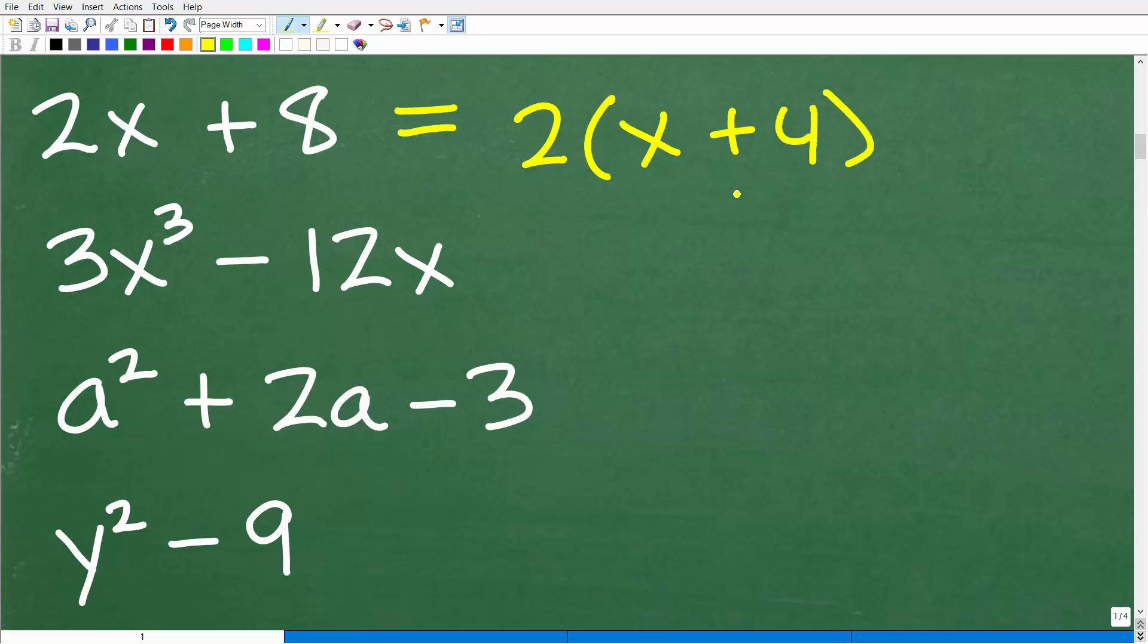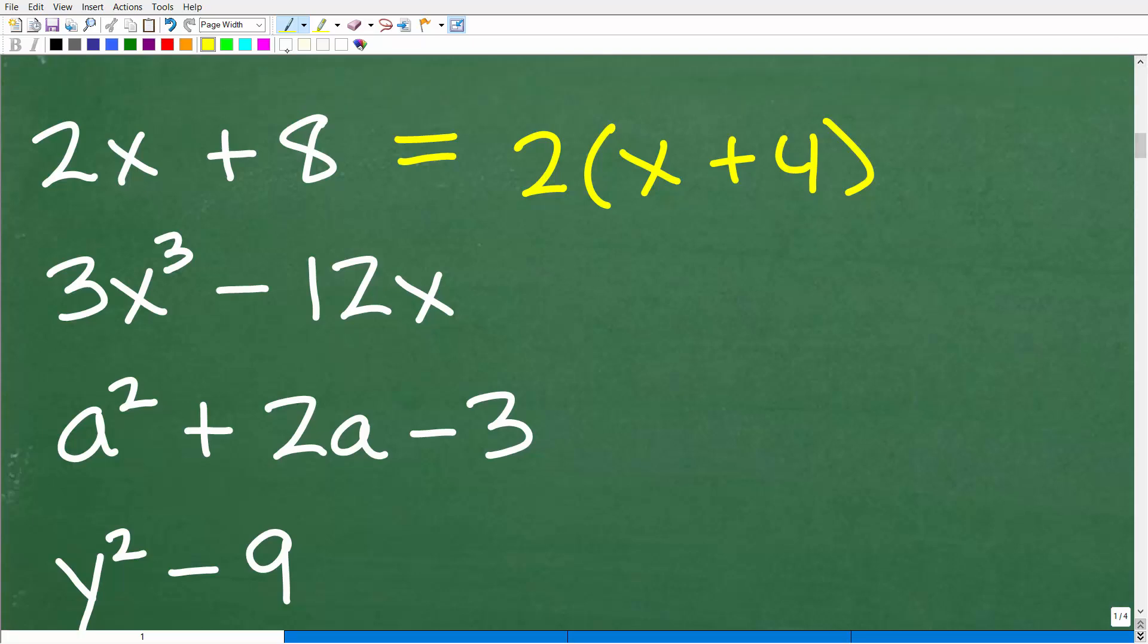Now, you can always check to see if you've factored something correctly by multiplying back in. So if I can take this 2, multiply it by x, and then 2 times 4, I'm going to get back to this. Now, I'm talking about a huge topic here in algebra, which is factoring. There's a lot of different skills involved. And if you are struggling in factoring, that's pretty common amongst algebra students. I'll give you some specific recommendations how you can improve. But if you can't do these problems, this is where you want to start.